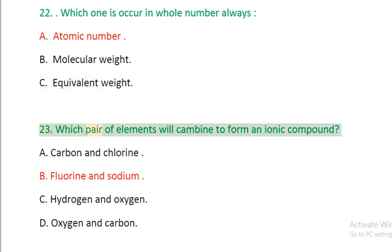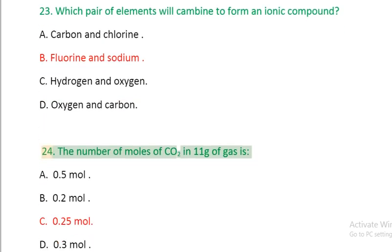Question 23: Which pair of elements will combine to form an ionic compound? A. Carbon and chlorine, B. Fluorine and sodium, C. Hydrogen and oxygen, D. Oxygen and carbon.